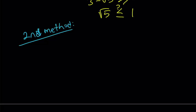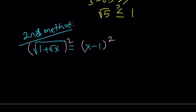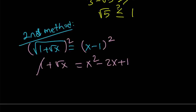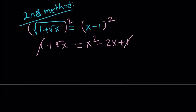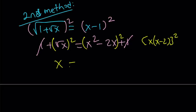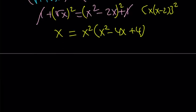The second method involves just brute force. We take this expression and square both sides, and we're just going to keep doing it. When you square first, 1 cancels out, which means we get a simpler equation. Then we square both sides one more time. Squaring the right-hand side — thinking of it as x times x minus 2 squared — gives x squared times x squared minus 4x plus 4. So x equals x to the fourth power minus 4x cubed plus 4x squared.